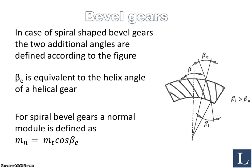In the case of spiral-shaped bevel gears, two additional angles are needed to define the spiral shape: beta and beta E. Beta E is the equivalent of the helix angle of a helical gear. For spiral bevel gears, you also typically define a normal module, as compared to the transversal module seen previously. The normal module is defined as the transversal module times cosine of beta E.